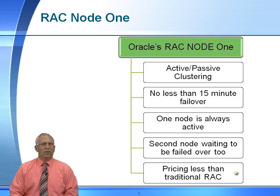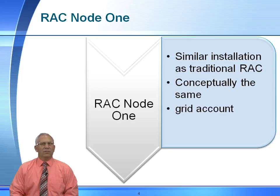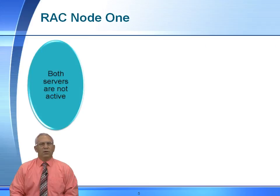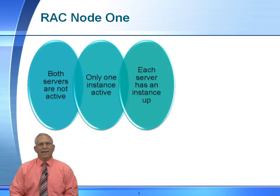The advantages of RAC 1 Node: it's less expensive than traditional RAC, but it does not give us the automatic failover requirements that traditional clustering provides. It is installed the same way as a traditional clustered environment — conceptually the same. You will have a grid account, an Oracle account, you will install the grid infrastructure software, lay down the clustering, install the database software, and then create the clustered database. However, it's all going to be created on one node. In the event that node fails, it will all be transferred over to a surviving node. Within RAC 1 Node, both servers are not active — you have one active instance and one inactive instance.